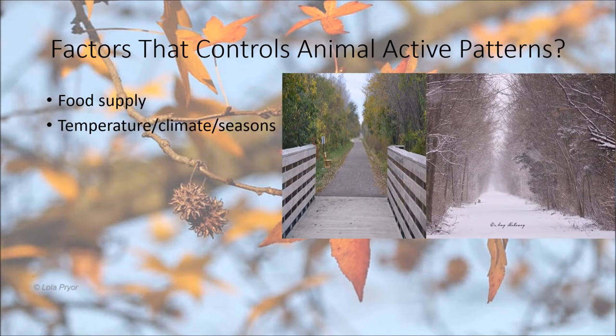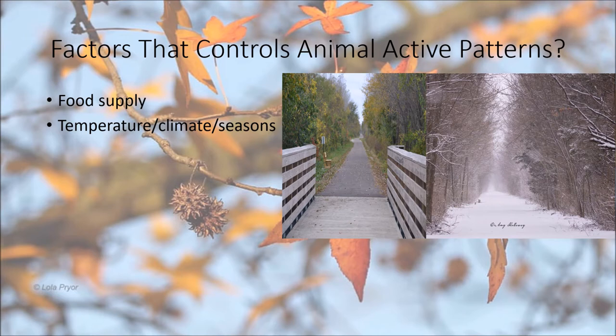The next factor — and it kind of goes along with food too — is temperature, climate, and seasons. This is a picture of the Marion Tallgrass Trail, about the same place, one summer and one winter. Animals would probably be more active in the ideal temperature. Think about a desert setting: during the daytime it's really, really hot, so few animals are active. But during the nighttime these animals become more awake and more active because they don't want to overheat.